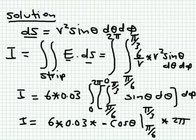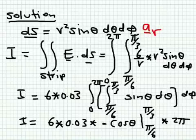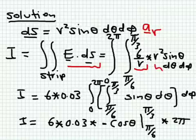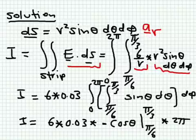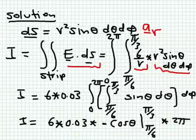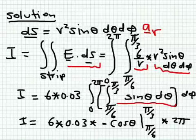We carry out our integral: for dS we have r² sine theta d theta d phi in the r direction. When taking the dot product between E and dS — since dS has only an r component — we pick only E_r, which is 6/r. Multiplied by r² sine theta d theta d phi, and a_r dot a_r gives one. To cover this strip, we integrate theta from pi over 6 to pi over 3, and phi from zero to 2 pi.